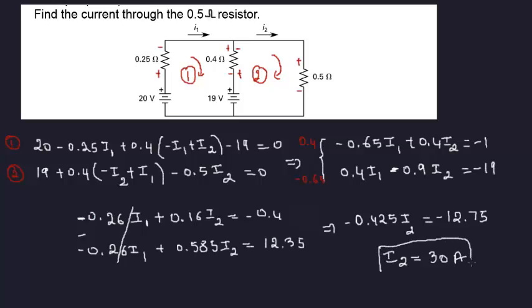So I2 is 30, we don't need to go back and find I1, unless it was asking, but it's not in this case. So I2, the current going through 0.5, final answer is I2 is 30 amp, and you can peer check me because I'm not sure if I did it right as far as the calculations are concerned. But the methodology is right, KVL, loop 1, loop 2. Alright, thanks.